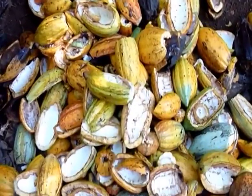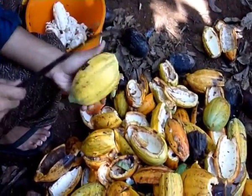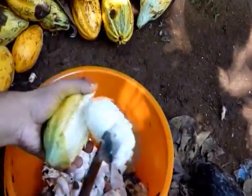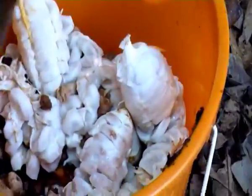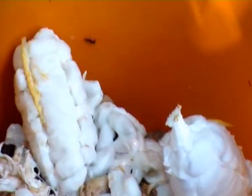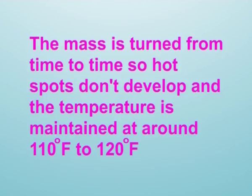The fermentation process gives flavor to the beans; the pulp slowly liquefies and runs off as temperature rises, taking up to a week. The beans start to germinate in the first couple of days of fermentation, soon killed by the high heat produced. This stage is very important since un-germinated beans lack flavor. The mass is turned from time to time so hot spots don't develop, and the temperature is maintained at around 110°F to 120°F.